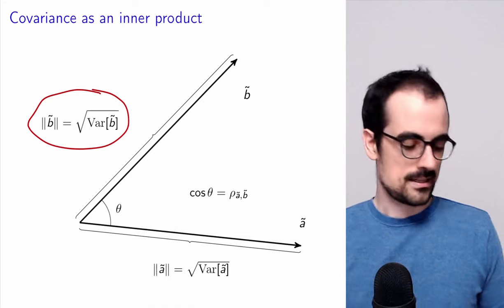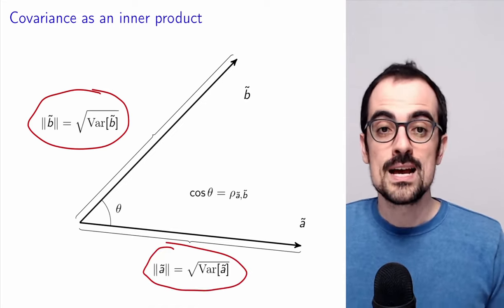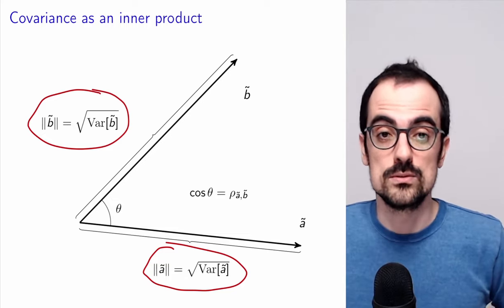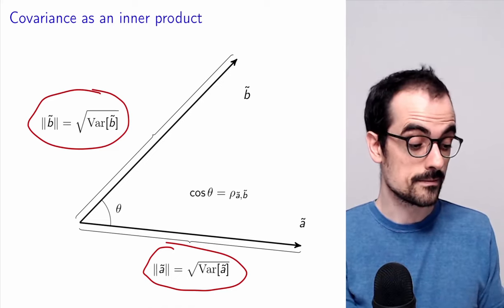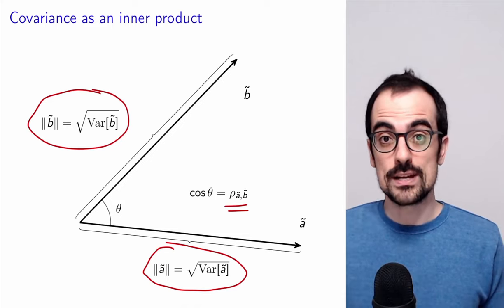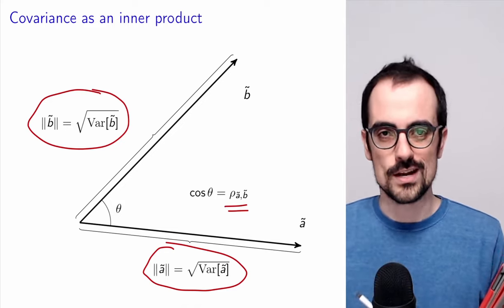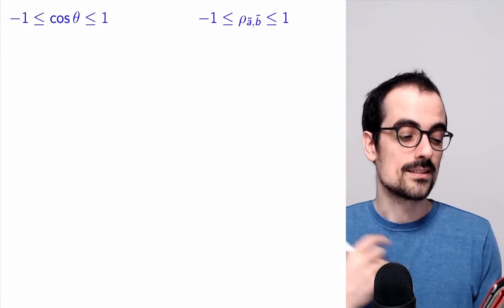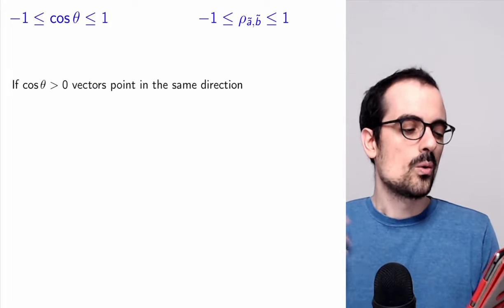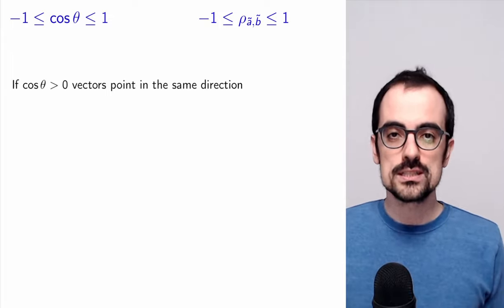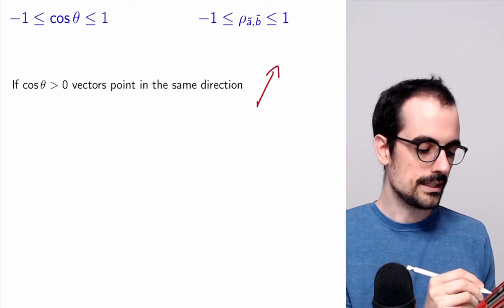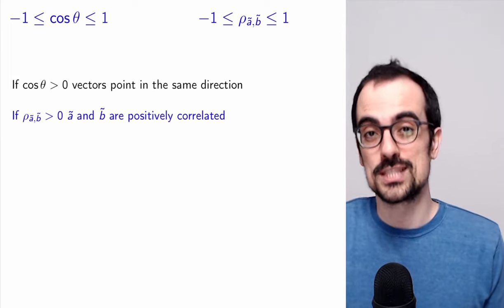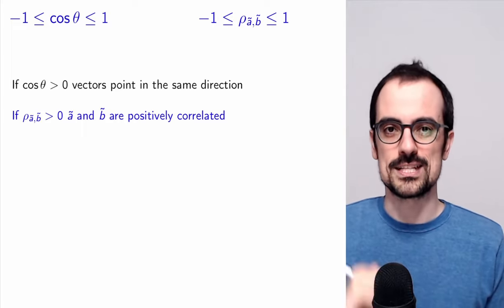If we interpret the covariance as an inner product, then the length of a random variable vector equals its standard deviation — the more a random variable fluctuates, the longer it is in this vector space. The relationship between variables is captured through the inner product: the cosine of the angle between two random variable vectors in this abstract space equals the correlation coefficient. We know the cosine of an angle is between minus one and one, and so is the correlation coefficient. When the cosine is positive, vectors point in the same direction — corresponding to positively correlated random variables.